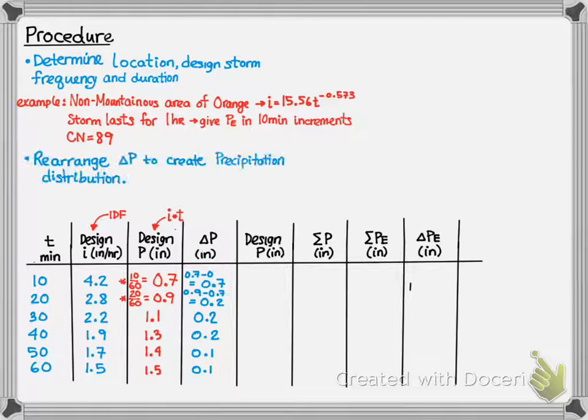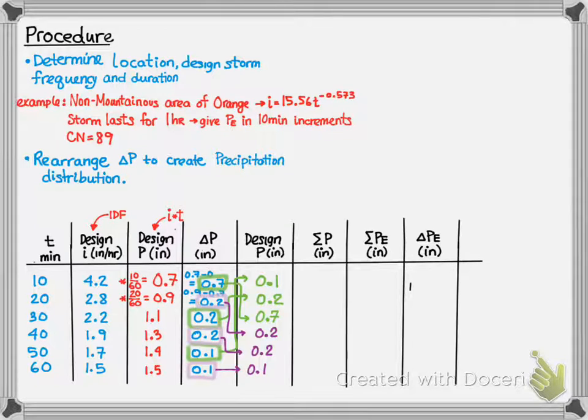Next, we need to calculate what they call the design P. This is done by rearranging the delta P to create a precipitation distribution. The way this works is we have to rank the rows. So, we look at the odd and the even rows. In the first cell, the highest odd row goes there. So, if you count the rows, there are six rows. So, we go to row 5, and the value of the delta P in row 5 now goes to row 1 in the design P column. Now, we'll go to row 3, and that goes into the next spot, and then row 1. On the opposite, we start and do even rows. So, we'll go to 2, then 4, then 6.